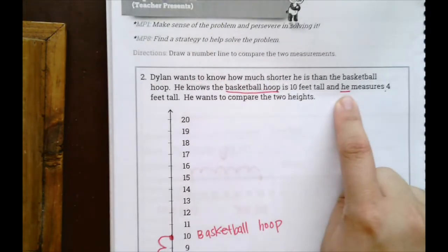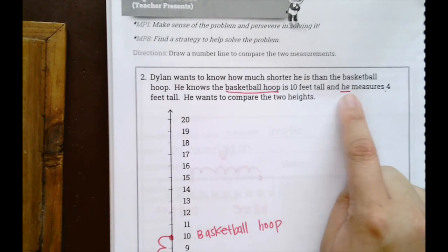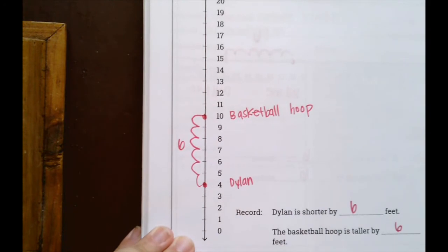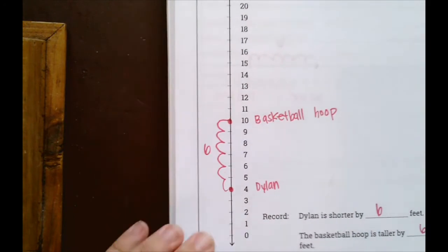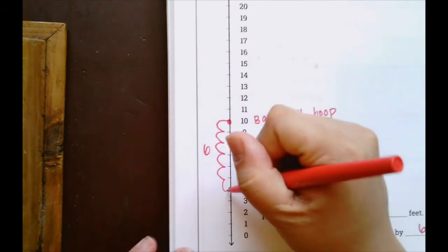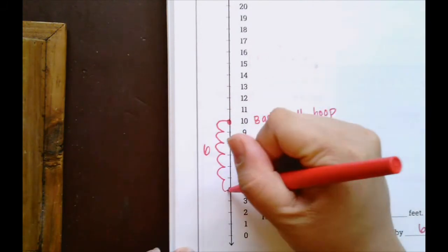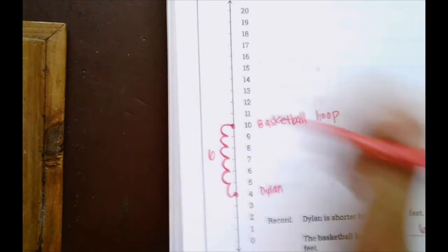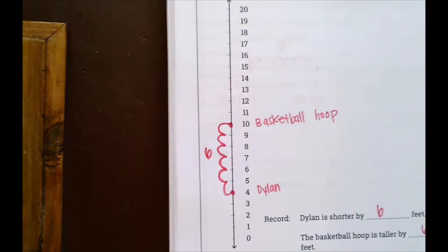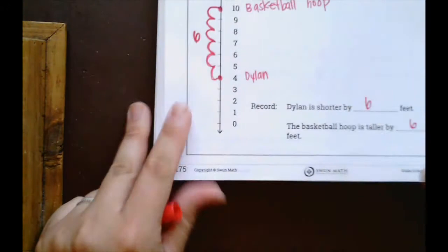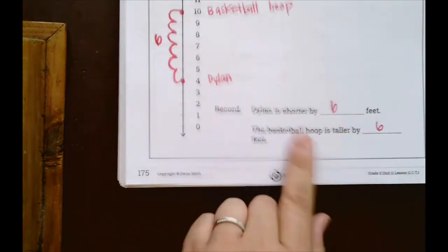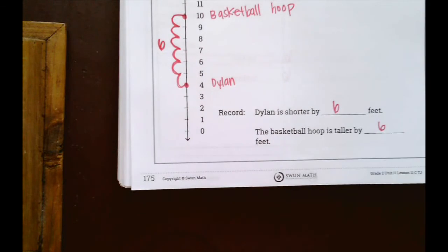The second object — he, which we know is Dylan — measures four feet tall. So put four feet down here and label it Dylan. Just like the first one, you're going to count on. Starting with the smaller number, count on from four to 10: one, two, three, four, five, six. Again, it's six. Dylan is shorter by six feet. The basketball hoop is taller by six feet.